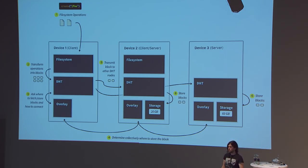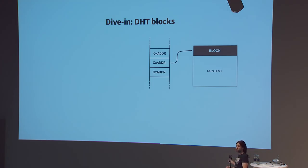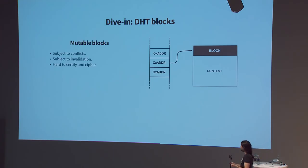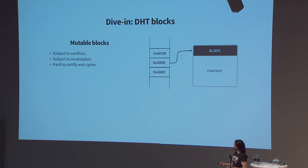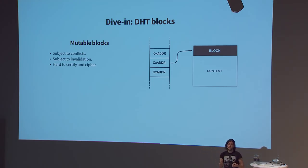Let's dive into the DHT. The DHT is a key-value store — at some addresses you find a block, a block being an arbitrary payload. We use two main categories of blocks. First, mutable blocks: the payload can change over time. These blocks are costly because they are subject to conflicts — if multiple nodes update simultaneously, we end up with a conflict, so we have to run consensus on writes. They are also subject to invalidation: when you download one, you can't hold it too long because it may change, and even when reading, you must run consensus to ensure you get the latest version.